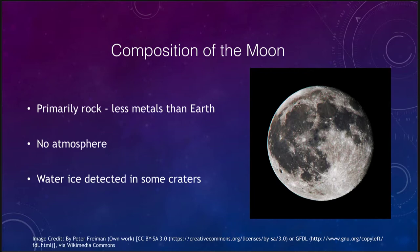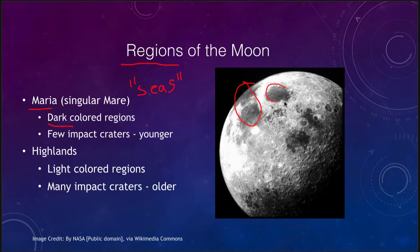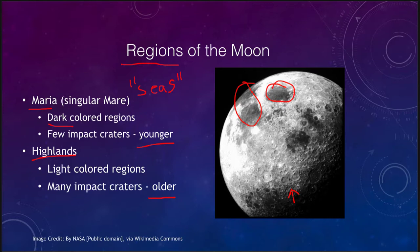The different regions of the moon include the Maria — singular mare — meaning seas, not because they have anything to do with water, but because they may have looked like watery areas to ancient astronomers. We now know they are very dark-colored regions. They have very few impact craters, making them younger areas — the number of craters on a surface tells us something about its age. The lighter-colored areas are the highlands, which have many many impact craters, making them significantly older parts of the moon.